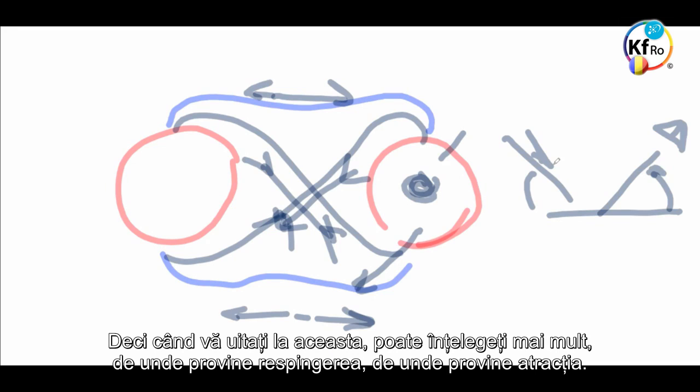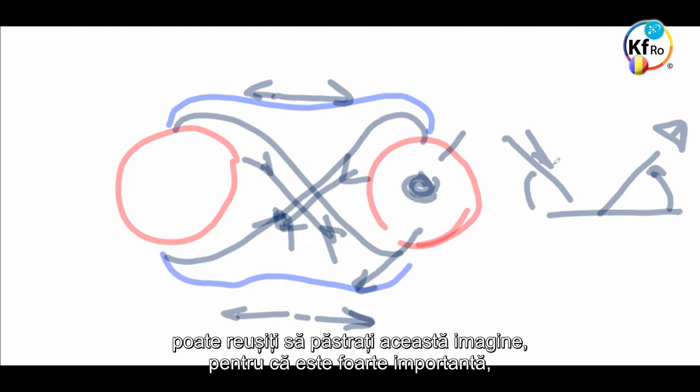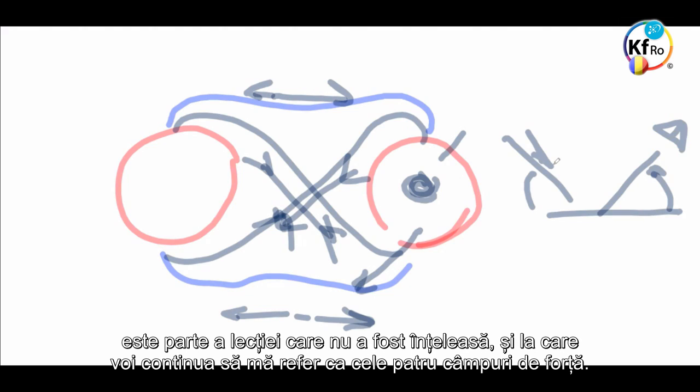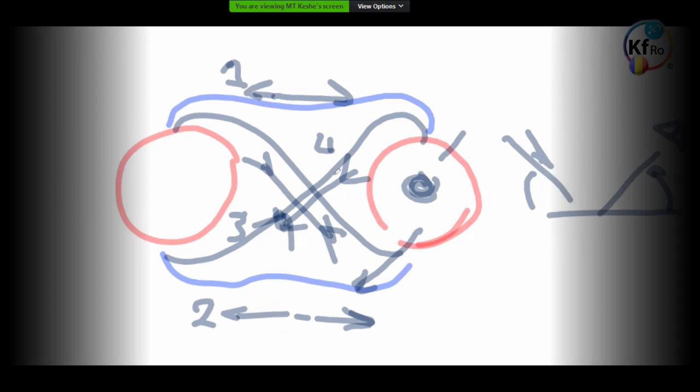So, when you look at this, maybe you understand more. Where the repulsion comes from, where the attraction comes from. This goes back and then, into a lot of interaction and tractions. And, a lot of things has to be explained. One of the things I was, I've been trying to bring up in the teachings. Maybe you can keep this picture, because it's very important. It's part of the teaching, which I have not understood. And, what I keep on referring as to, the four Field forces. This is number one, this is number two, this is number three, and this is number four.